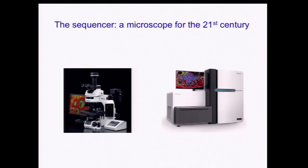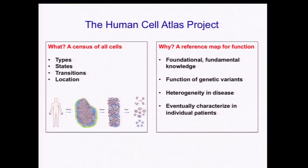This is actually what we see in these rotating spheres that represent the zebrafish embryo at about a 10,000-cell stage. This all suggests that the sequencer may very well become the microscope for the 21st century. What I want to do in my other five minutes is to suggest how we can put this microscope to very good use in order to build a Human Cell Atlas that gives us all of the types, states, transitions, and locations of cells.